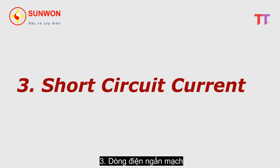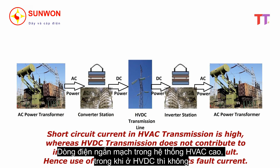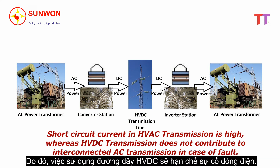Three: short circuit current. Short circuit current in HVAC transmission is high, whereas HVDC transmission does not contribute to interconnected AC transmission in case of fault. Hence use of HVDC transmission limits fault current.